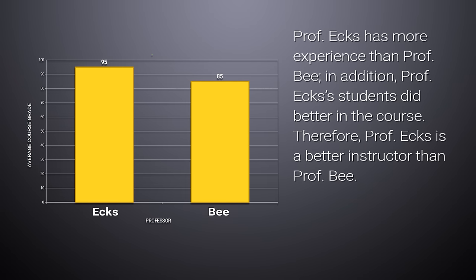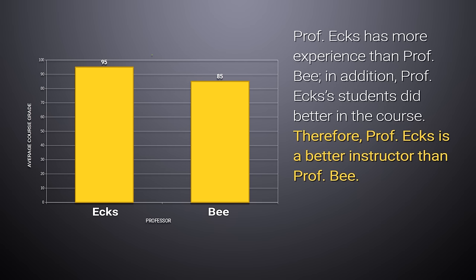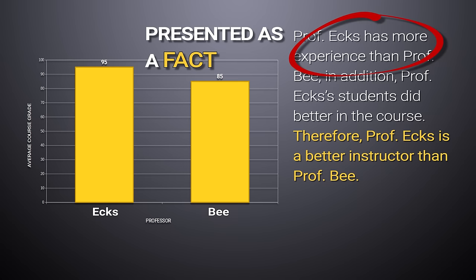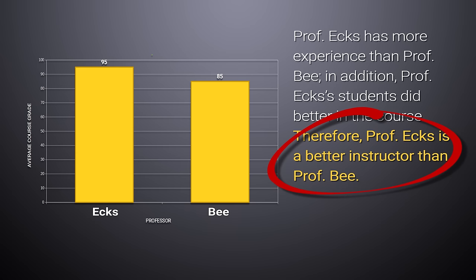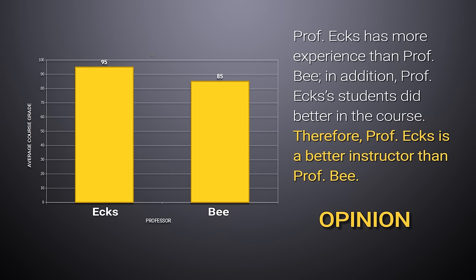Professor X has more experience than Professor B. In addition, Professor X's students did better in the course. Therefore, Professor X is a better instructor than Professor B. This is presented as a fact — I can verify it by looking at the instructor's professional records — and his students did do better, as we can see in the graph. But the conclusion that he's a better instructor is still an opinion. It's a little stronger now because it's based on two pieces of evidence, but it's still an opinion.